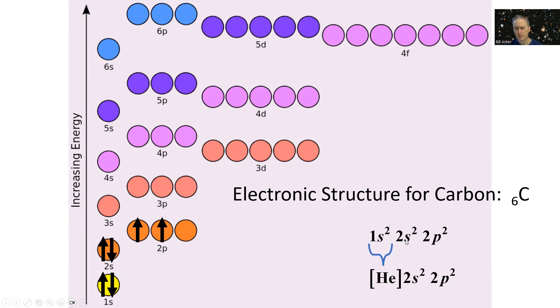We write this as 1s² 2s² 2p². And again, helium, then 2s² 2p². So carbon has a total of four valence electrons, two in the 2s and two in the 2p.